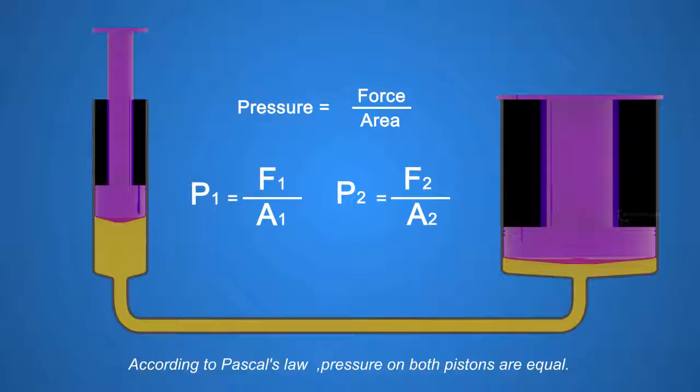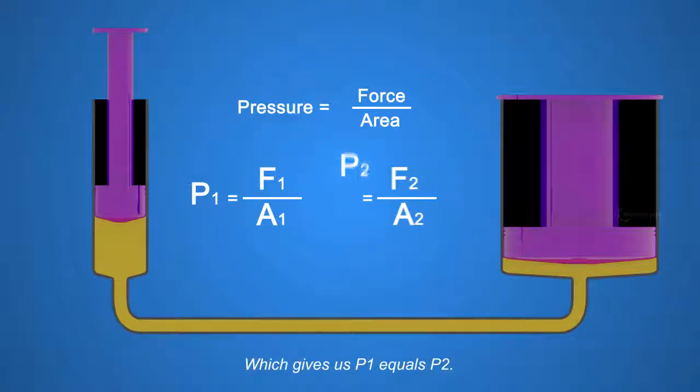According to Pascal's law, pressure on both pistons are equal, which gives us P1 equals P2.